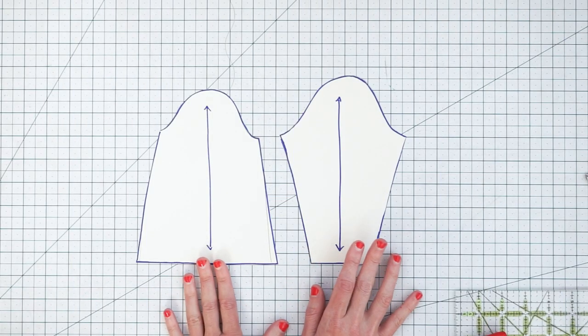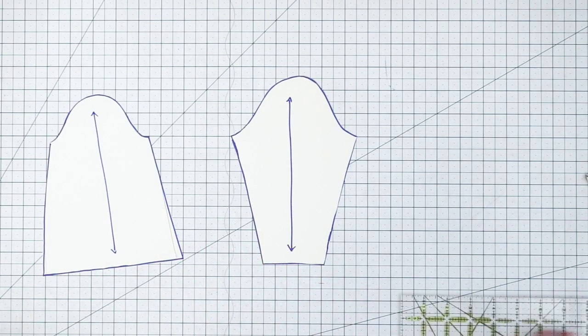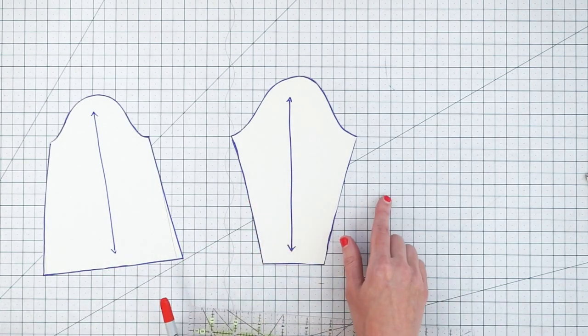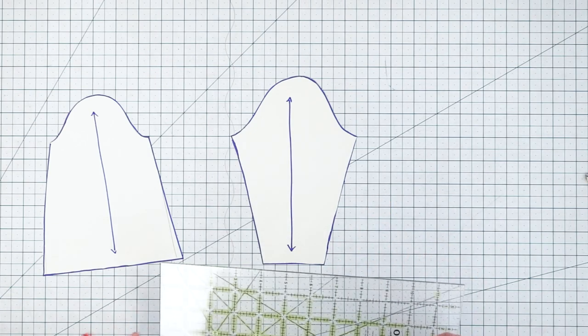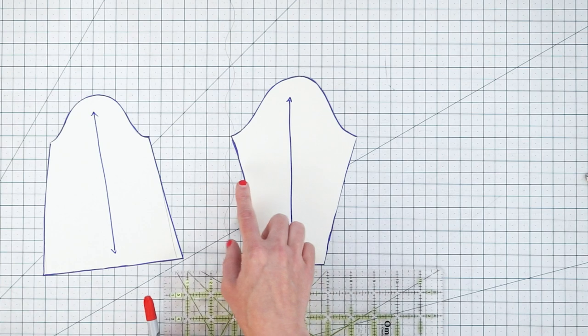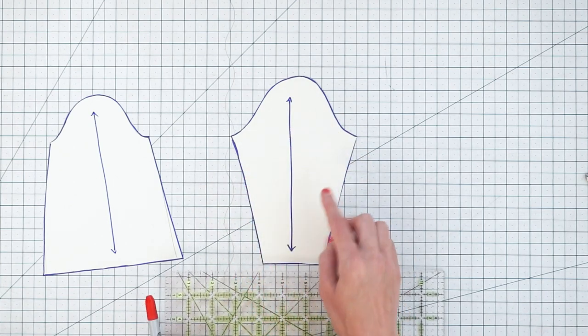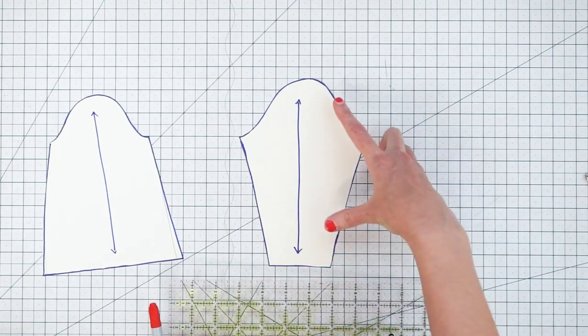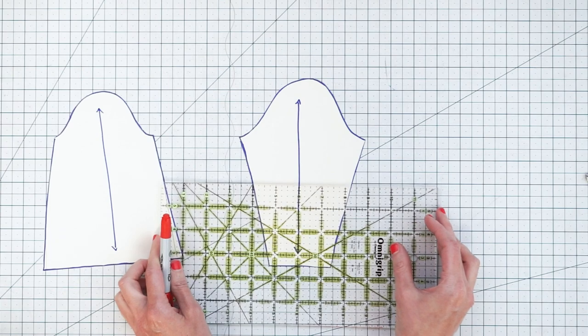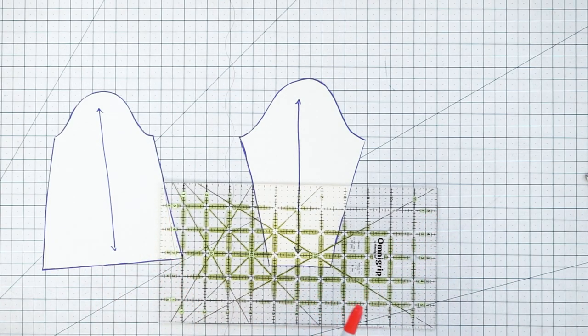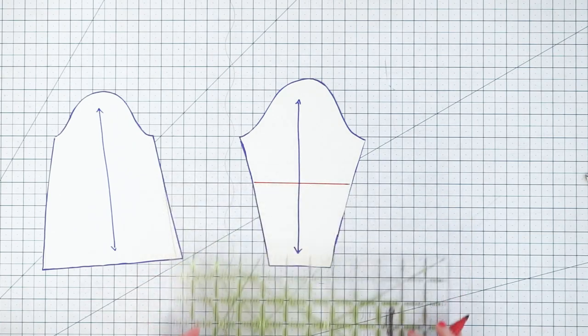So let's start with shortening and we'll start with our tapered sleeve. And if you don't have lengthen shorten lines in your pattern you can just draw them in. And the one thing you want to make sure is that that line is perpendicular to your grain line. So it's 90 degrees and that's going to ensure that you cut your fabric on the grain line all the way down the sleeve. So we'll just grab the ruler and draw a line 90 degrees to our grain line just like so.